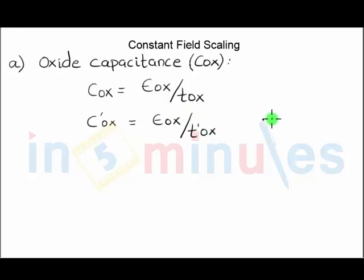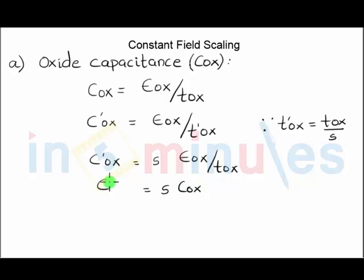Now since we know that after scaling TOx is nothing but TOx by s, so we can very easily write this is nothing but equal to s permittivity by TOx, which is nothing but s into COx. So what we see is the oxide capacitance increases by a factor of s.